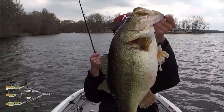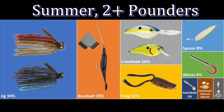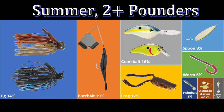Let's look at summertime baits. For any size fish in the summer: 34% of my bass came on a jig, 19% on the buzzbait, 16% on the crankbait, and 12% on the frog. Over 30% of my summer fish come on topwater baits. The jig is the number one bait again for summertime fishing — when it's not number one, that's actually something to look out for — and crankbaits are up there as always.